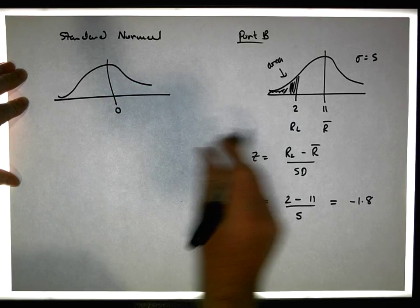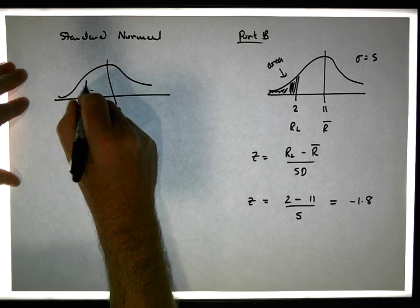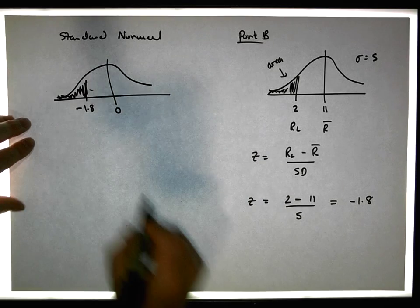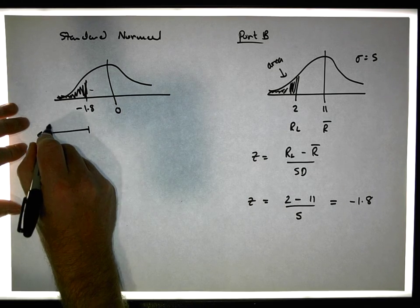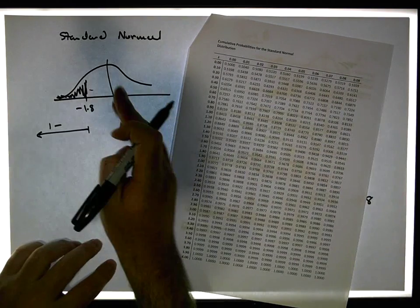Don't forget, 11 goes to zero and 2 went to minus 1.8. So the question is, what is that probability, what is that area in here? If I look that up on my tables, my tables are cumulative so it only gives us positive z-scores, but when I flip it, it's the same, so I'm going to take away from 1.